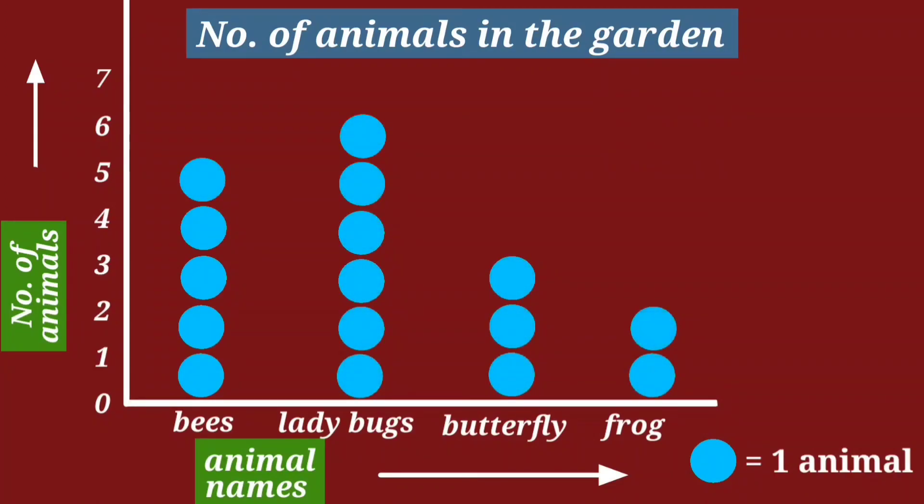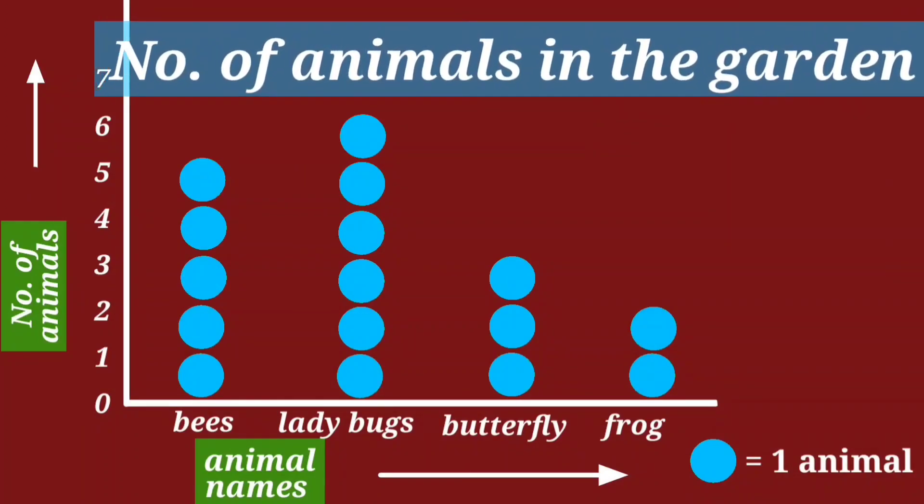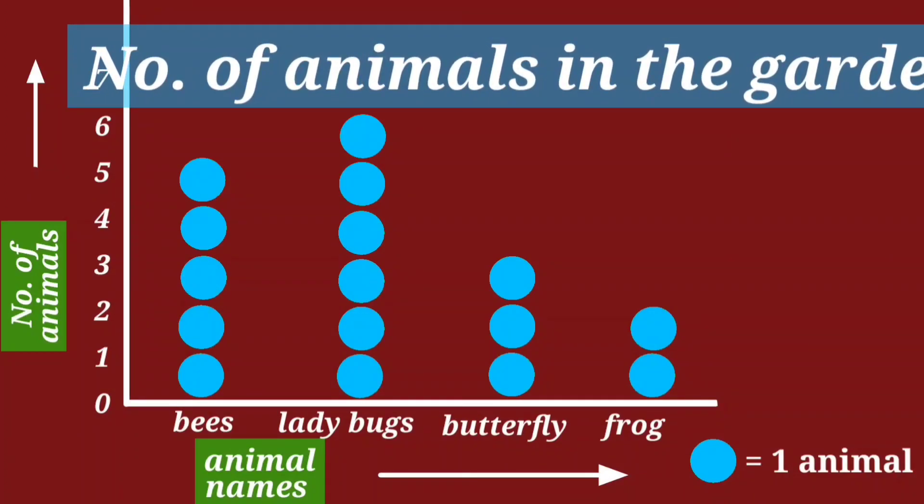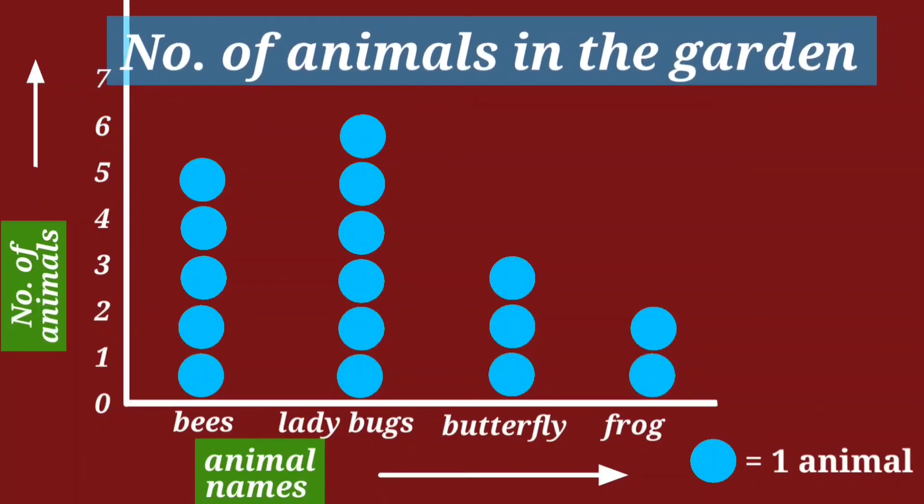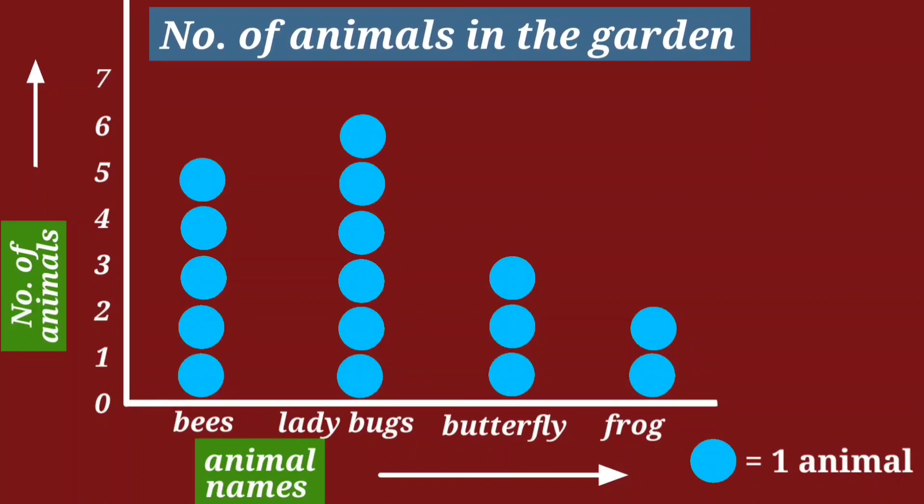Title of the pictograph tells what data is being depicted. While making a picture graph or while reading it, scale is very important. In this example, we have limited data. So, we took 1 circle equal to 1 animal. But, if the figures increases, we can increase the scale as well.